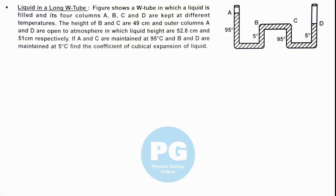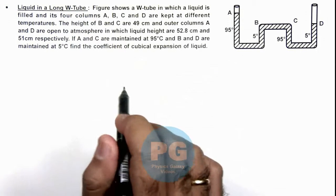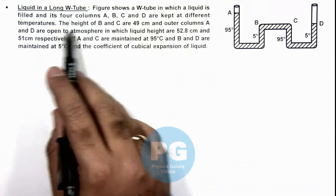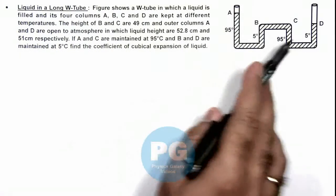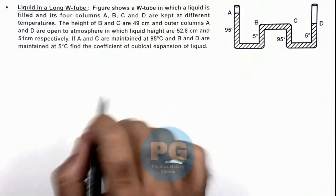In this illustration we'll analyze a liquid in a long W-tube. Here the figure shows a W-tube in which a liquid is filled, and its four columns A, B, C, and D are kept at different temperatures, and temperatures are also mentioned here.